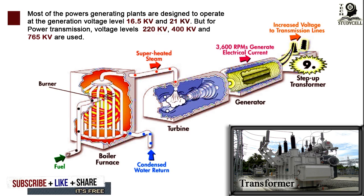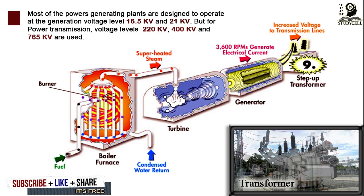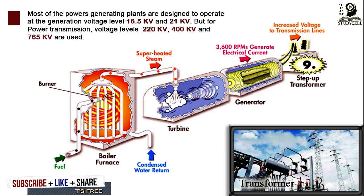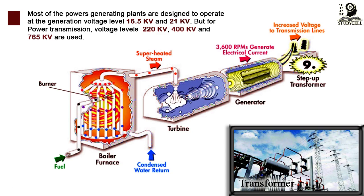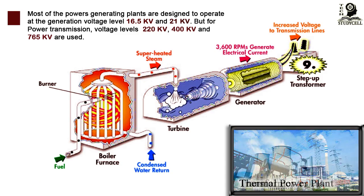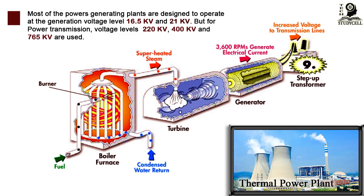For power transmission, voltage levels of 220 kV, 400 kV, and 765 kV are used. Thermal power plants help meet almost half of the world's power demand.